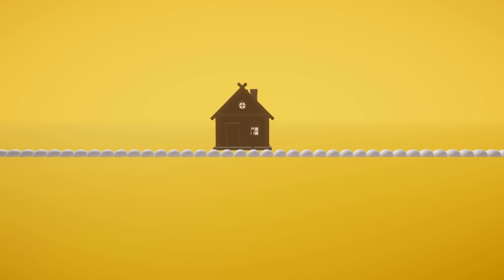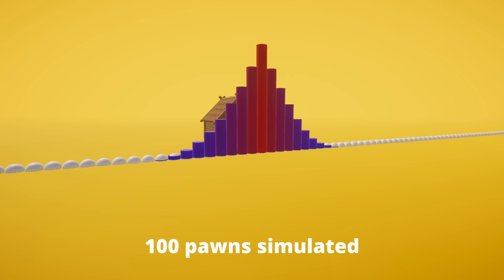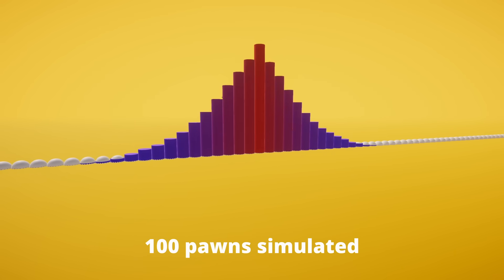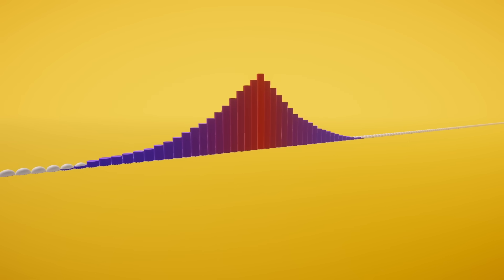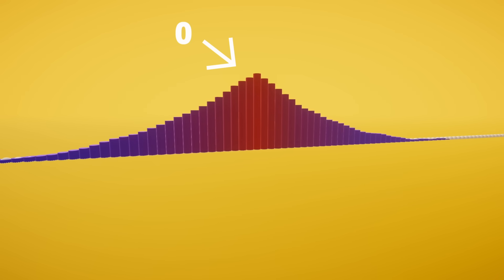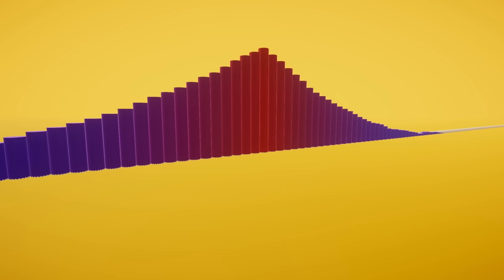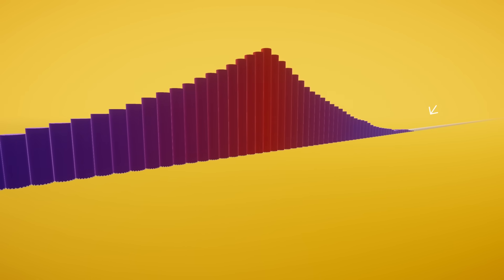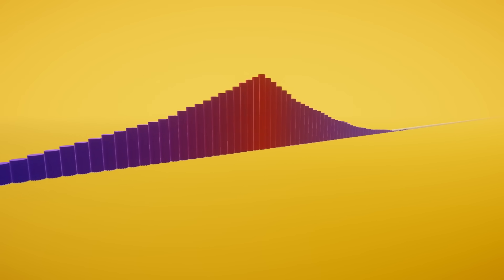I ran a hundred independent walkers for the same number of steps and plotted a histogram of their positions. As we can see, they form a bell curve. The bars near the zero node are hollow, which means most walks stay close to the house. Occasional long trips exist, but the mass stays piled up at the origin.